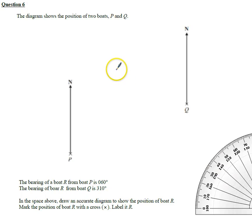Alright, question six. This is a bearings question and it's got a diagram here. It's worth three marks and you can see I've just got my protractor ready here on the side. It says there's a boat R which is in a bearing of 060 from P.